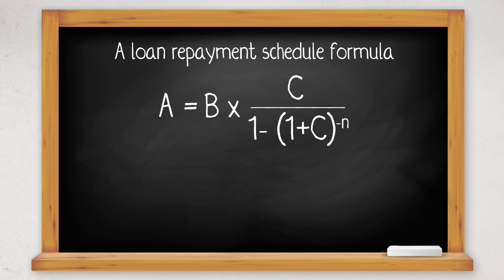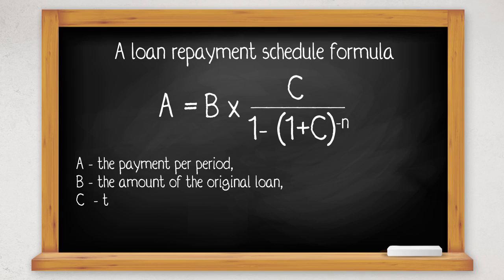These symbols mean A is the payment per period, that's what we're trying to work out. B is the amount of the original loan, C is the rate per period as a decimal, and n is the number of periods.